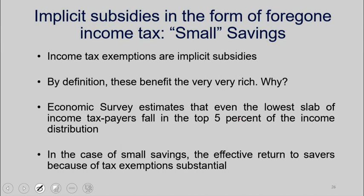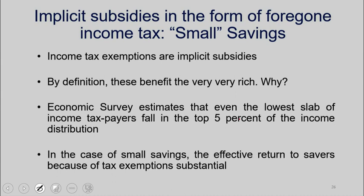We use this to calculate, for example, in the case of small savings schemes — post office, provident fund — we give both better interest rates and a tax exemption. If you add together the better interest rate and the tax exemption against what a normal return should be on a bank deposit or government bond, we find that there's a huge subsidy to these so-called small savers, so-called middle-income class people, who are actually at the very top end of the income distribution.